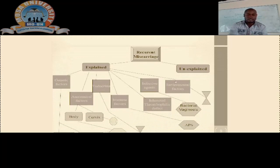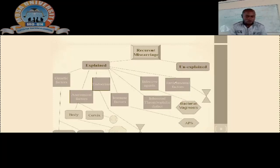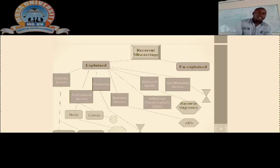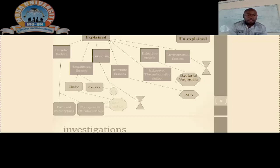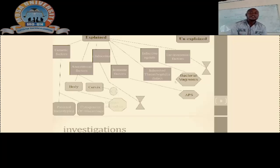Recurrent miscarriages can be divided into two parts: factors that can be explained and those that are unexplained — idiopathic, meaning we still don't understand the cause. For the explained factors, we may talk about genetic factors such as parental karyotyping. Also endocrine causes like diabetes, anatomic factors such as the uterine body and cervical incompetence, immunological factors, infective agents like TORCH infections and CMV, and environmental factors such as smoking and alcohol.